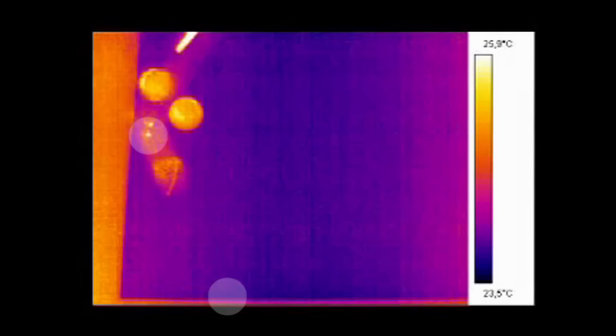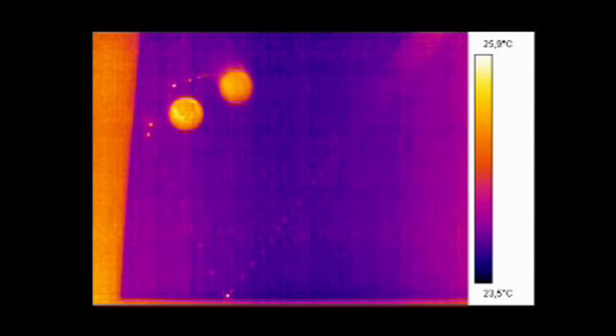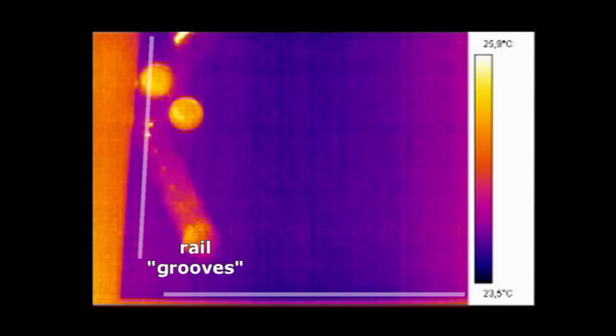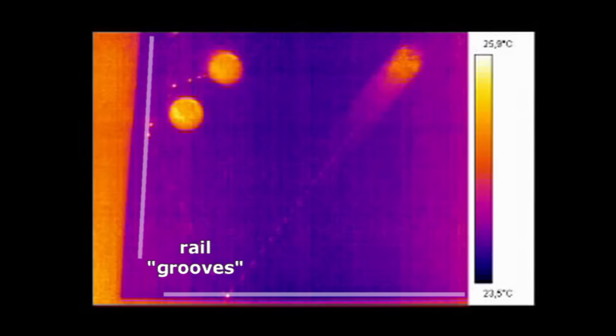Whenever a ball hits a cushion, it gets driven down into the table, which also causes hot spots and cloth wear. That's why rail grooves develop on a pool table after lots of use.